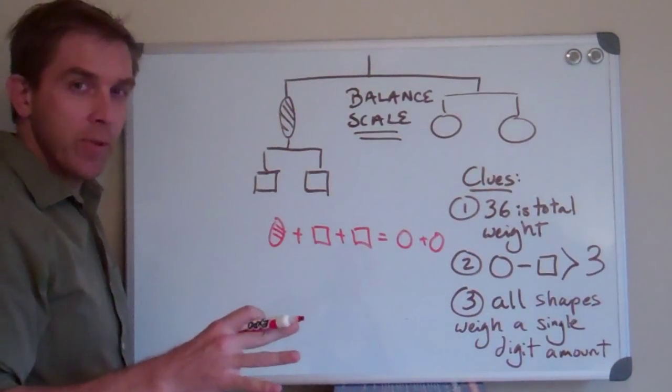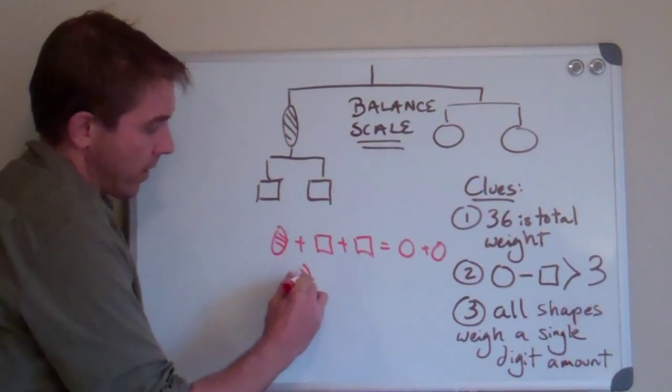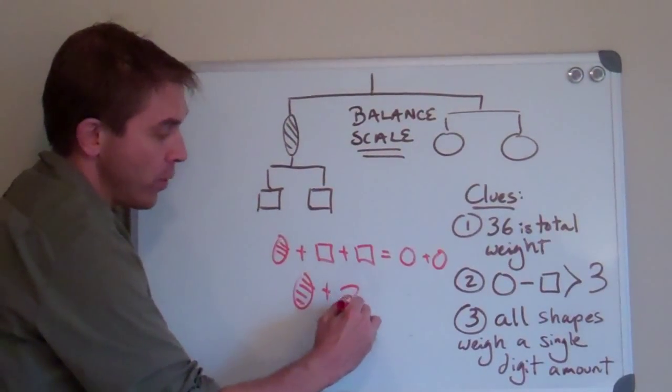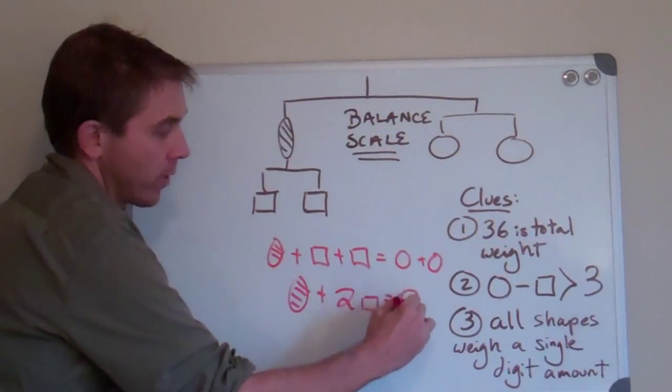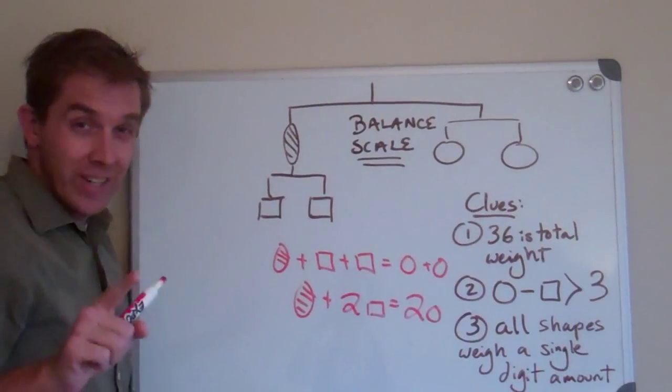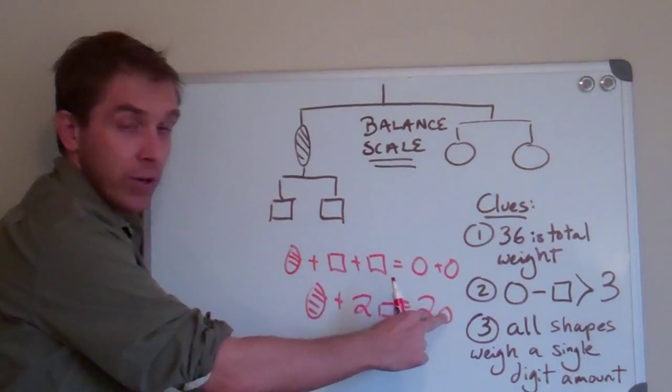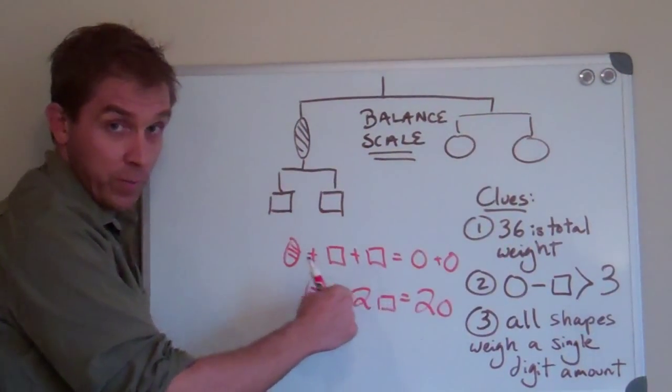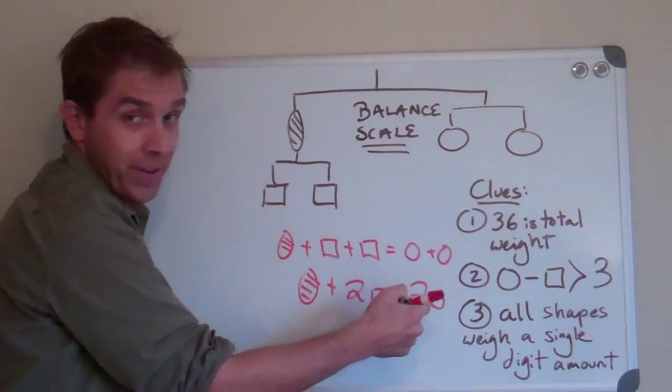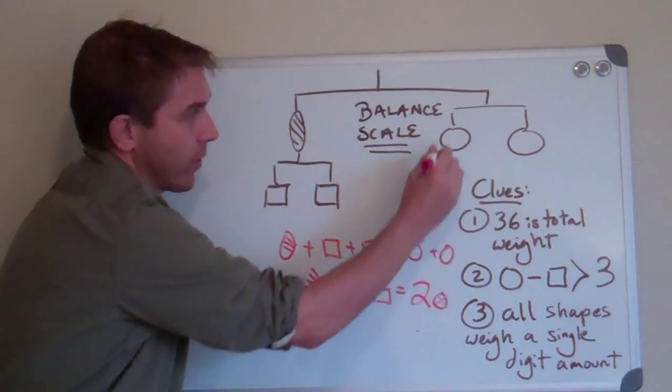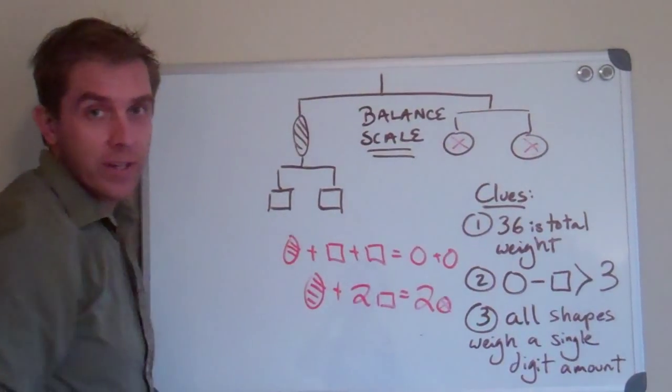You also want to try to simplify a little bit. So I'm going to rewrite this. Oval plus two of the squares are equal to two of the circles. So you can see right away that two circles equal two squares plus an oval. This isn't a twenty, right? This is a circle. I'll put a little axis here to make sure that you can tell.